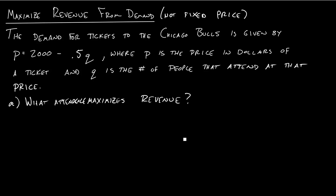In this example we're looking at the Chicago Bulls. The Chicago Bulls are selling tickets and they want to know how many tickets they need to sell to maximize their revenue. The only piece of information they give us is this relationship between price and quantity — a demand curve. The way we're always going to start these revenue or profit maximization problems is by writing down a general equation: revenue equals price times quantity.